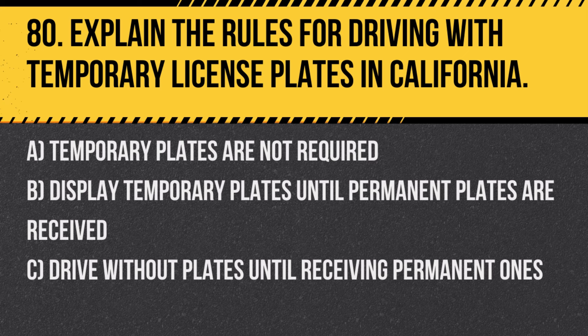Question 80: Explain the rules for driving with temporary license plates in California. A. Temporary plates are not required. B. Display temporary plates until permanent plates are received. C. Drive without plates until receiving permanent ones. Answer: B. Display temporary plates until permanent plates are received. This ensures the vehicle is identifiable and legally compliant while awaiting permanent registration.